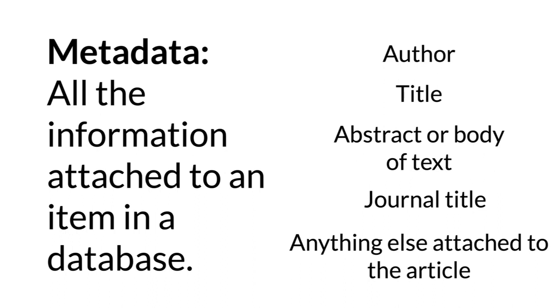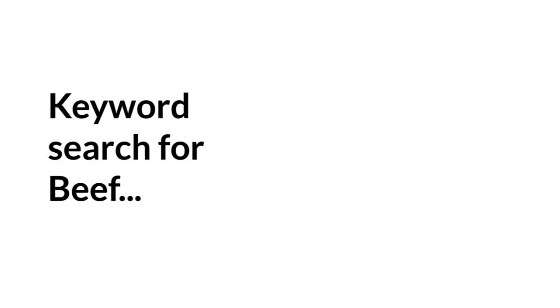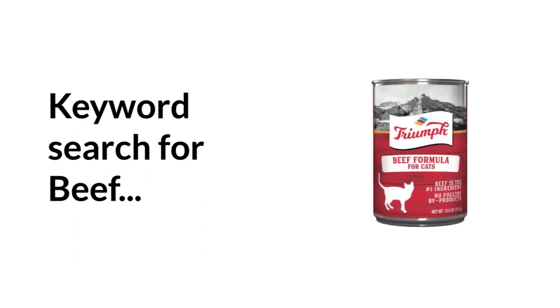That means when you run a keyword search, any articles with your keyword or keyword phrase anywhere in the attached metadata will show up in your search results. This is a broad, somewhat unfocused way to conduct a search because it will bring up all kinds of things that you might not be interested in. For example, if I'm looking for items about beef, I might get things that have the keyword beef somewhere in the metadata, but the item might be something very different — my results might include beef flavored cat food, which I'm not interested in.